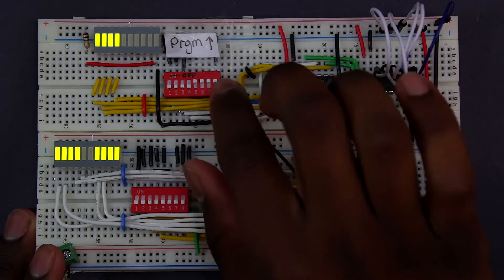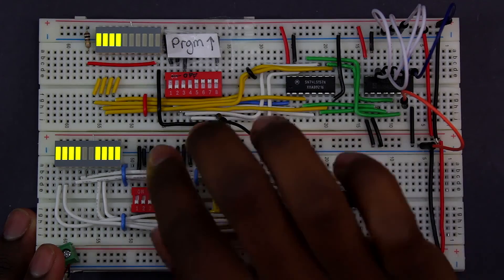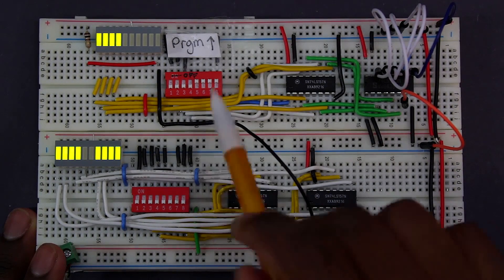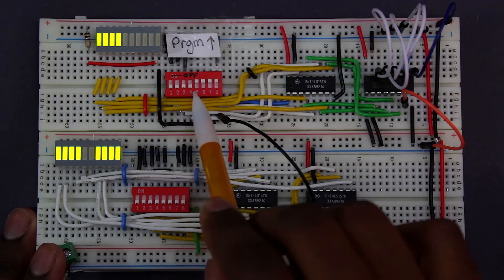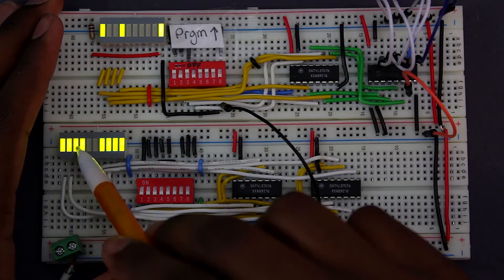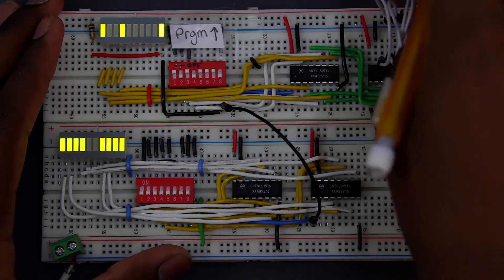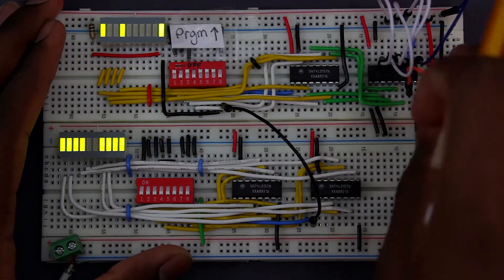Now, you should remember, but the last eighth bit on this dip switch toggles between program mode, which we are in now, and run mode. In program mode, you can see the LED array reflects the dip switch as it should. If we set it to run mode, then the LED array should reflect the contents of the register. We have random junk in the register, as we should, because it's just turned on.